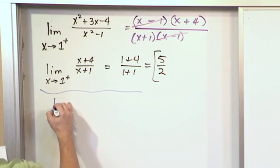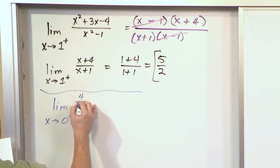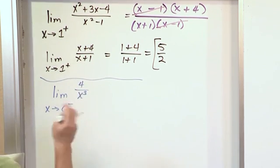What if I asked you to take the very simple limit as x approaches 0 from the right of the function 4 over x cubed? I said, hey, what is this limit?